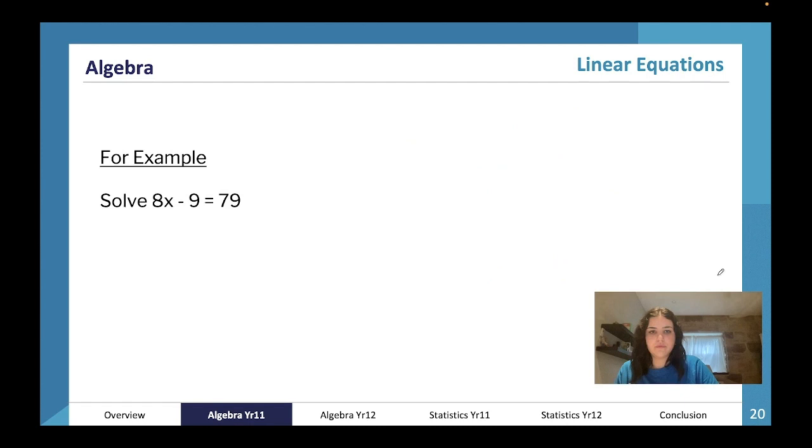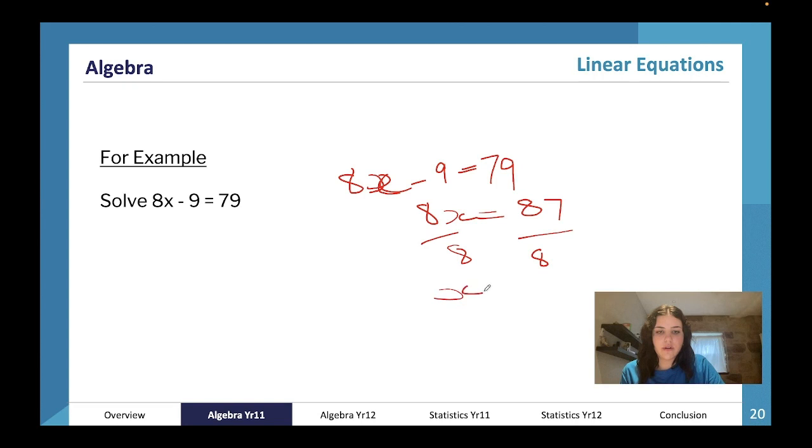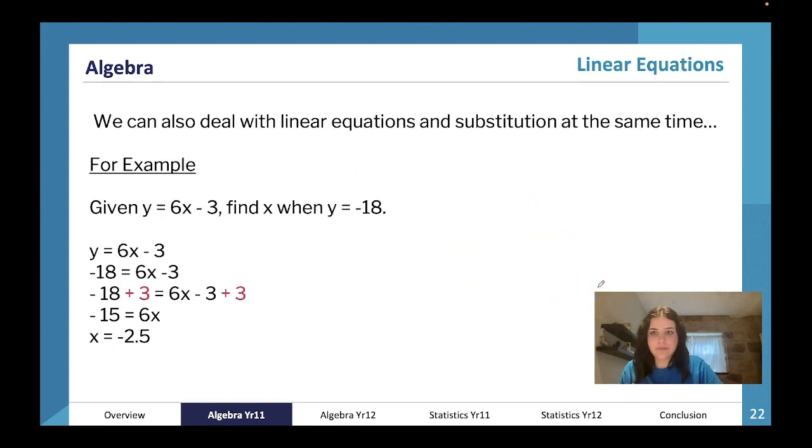We have another one here. For example, solve 8x minus 9 equals 79. How am I going to do this? Same thing as before. 8x minus 9 equals 79. We're going to add 9 to both sides to get 8x on its own. 87, and then we're going to divide each side by 8 to get x on its own. So x will equal 87 divided by 8, which is 10.875, which we can round up to x equals 11.